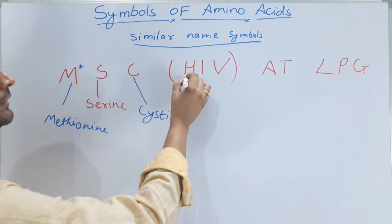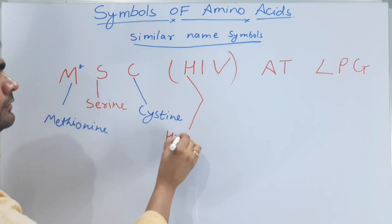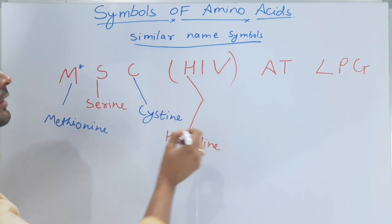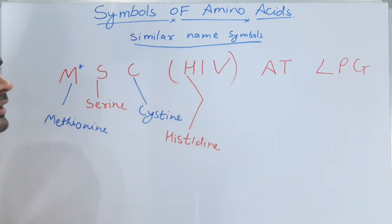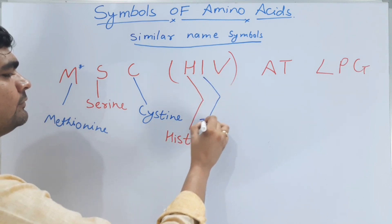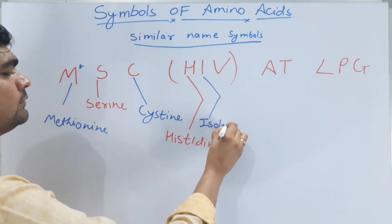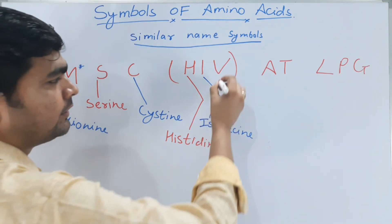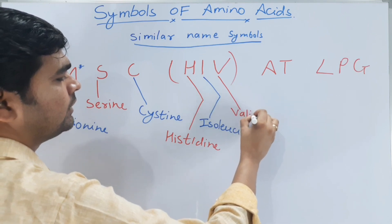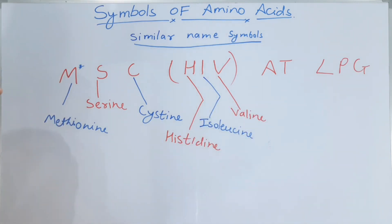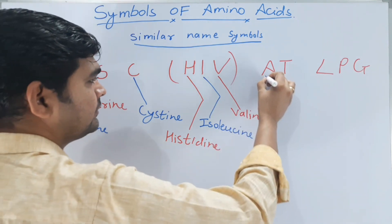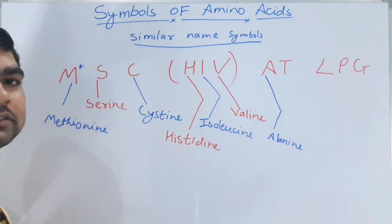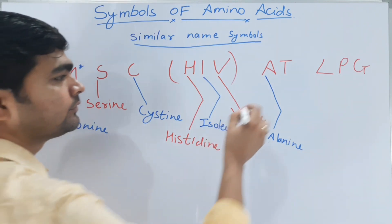Now for HIV: H is the symbol for histidine. I is the symbol for isoleucine. V is the symbol for valine. Then 'at': A is the symbol for alanine, and T is the symbol for threonine.